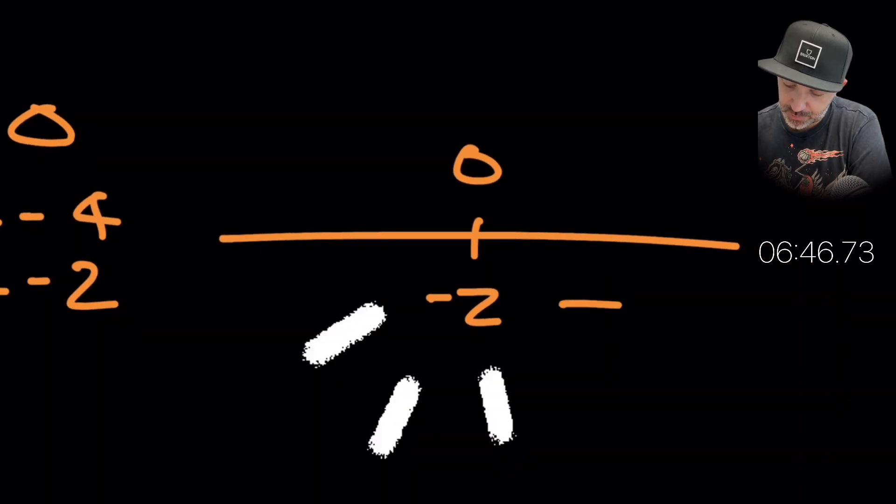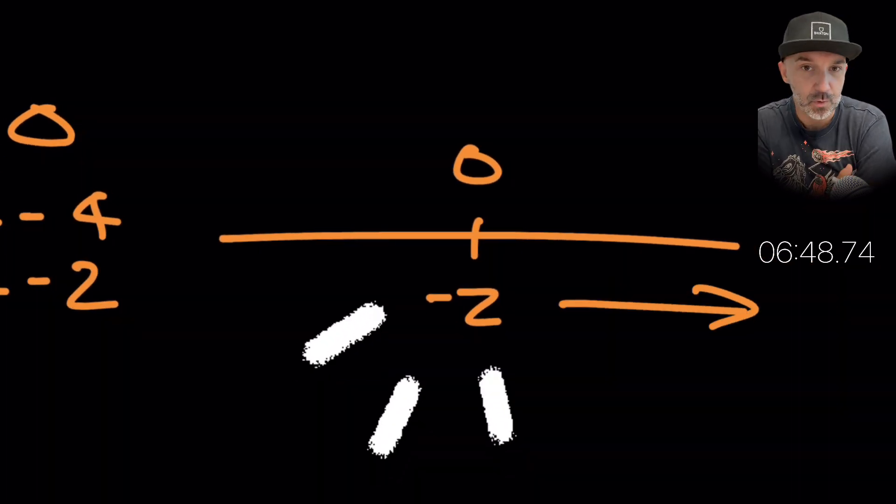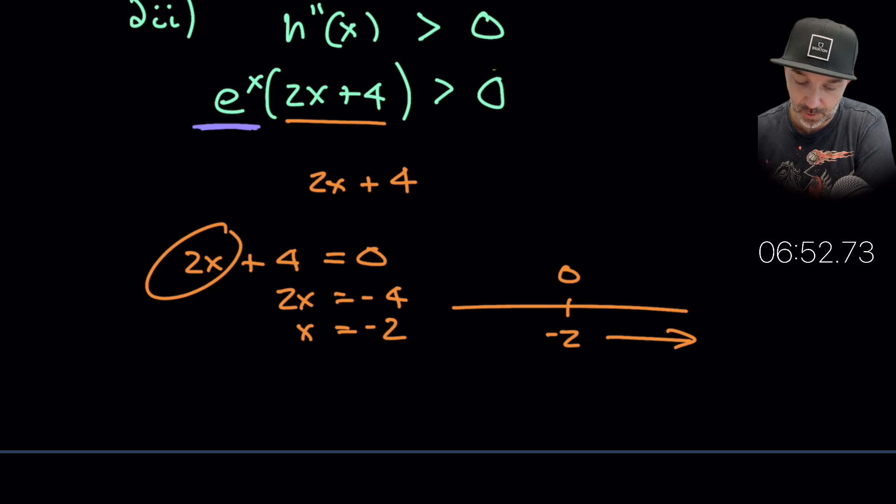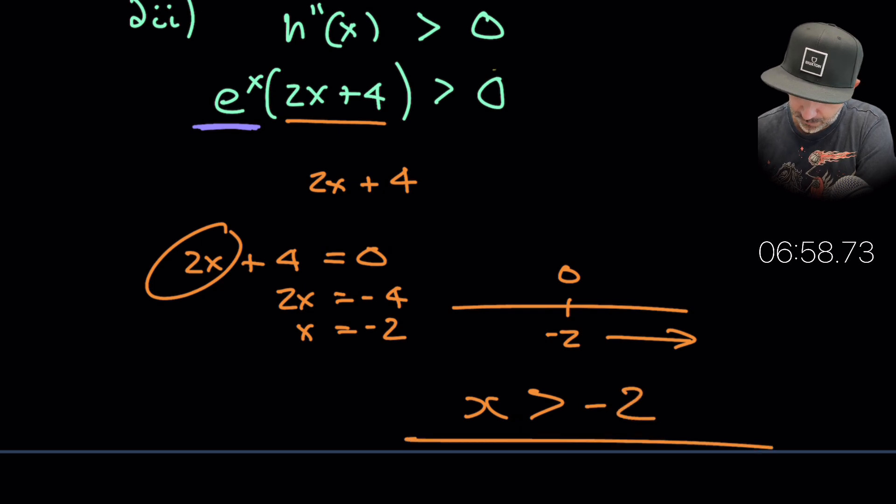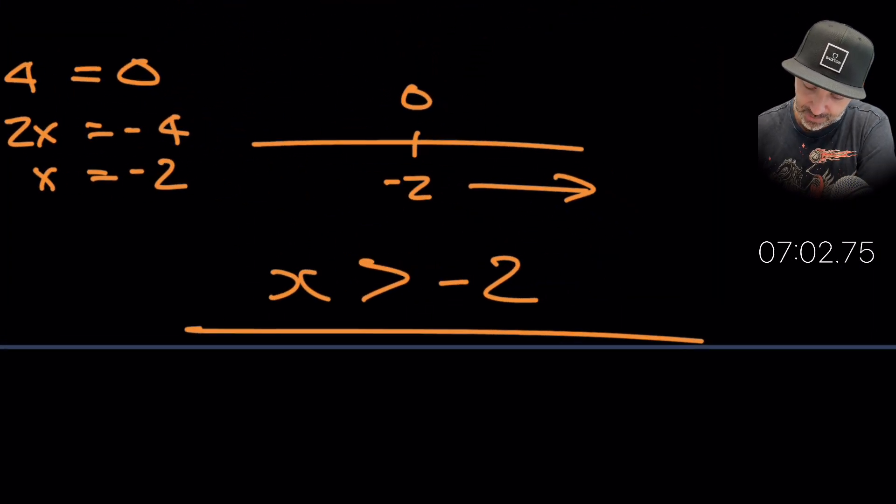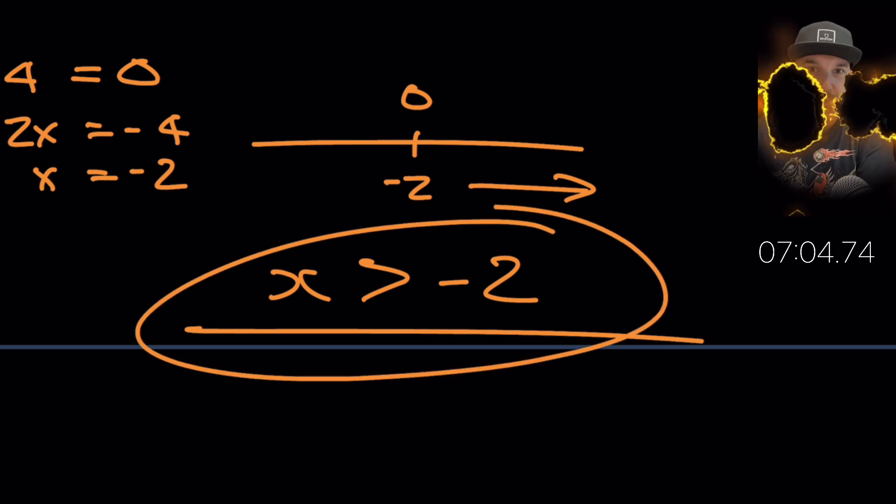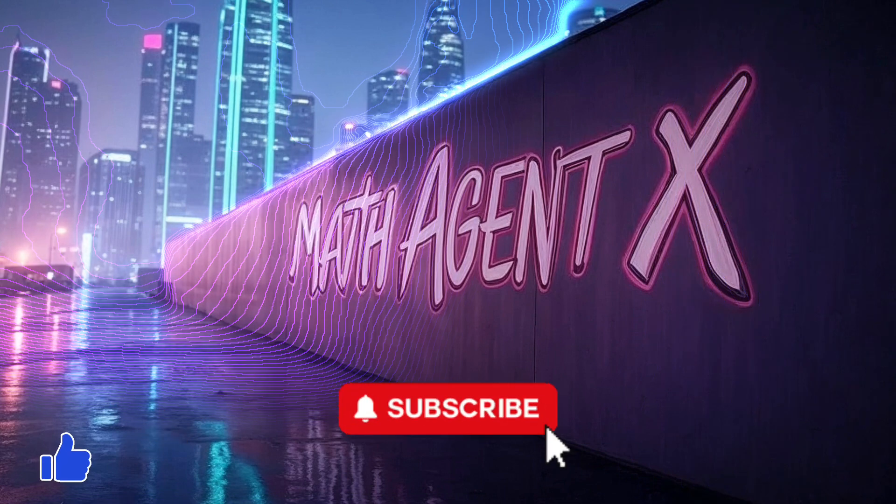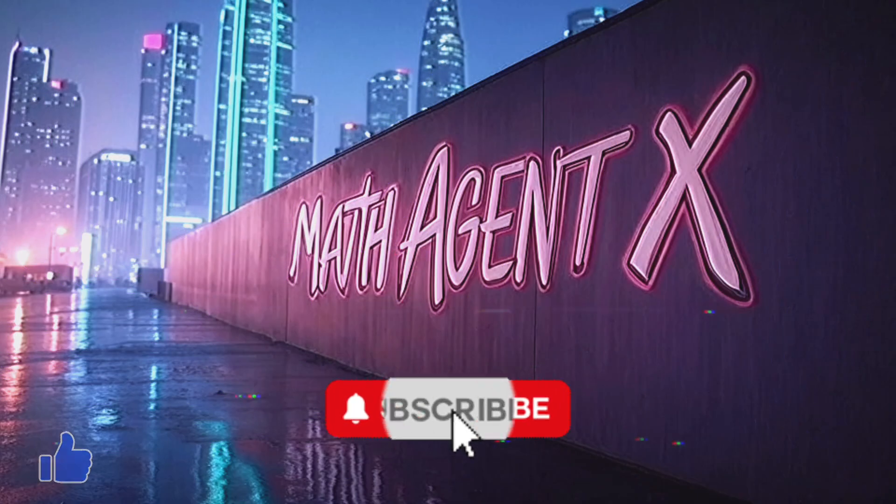So all values to the right of minus 2 would lead us to the conclusion that it is a concave up nature. Okay so my final answer would be that x has to be greater than minus 2 for this to be true. Find the values for x which is concave up and that is it, that is the end of the question. Good luck, let me know how you get on in the comments below, don't forget to like and subscribe to the channel. See you next time, agent x signing off.